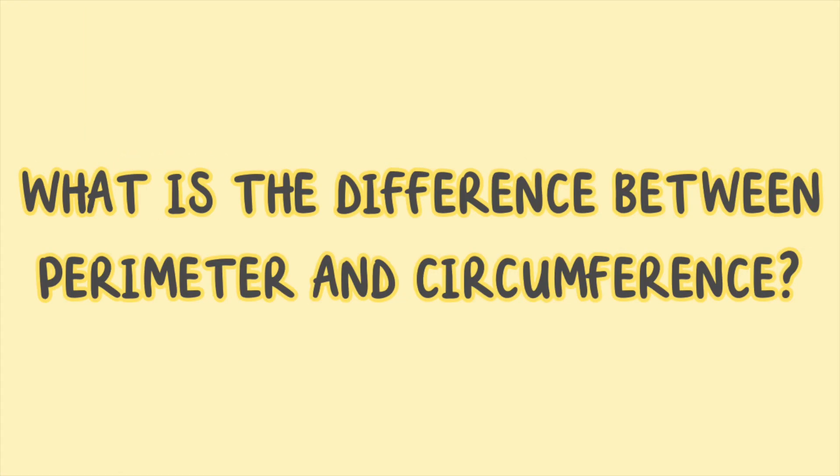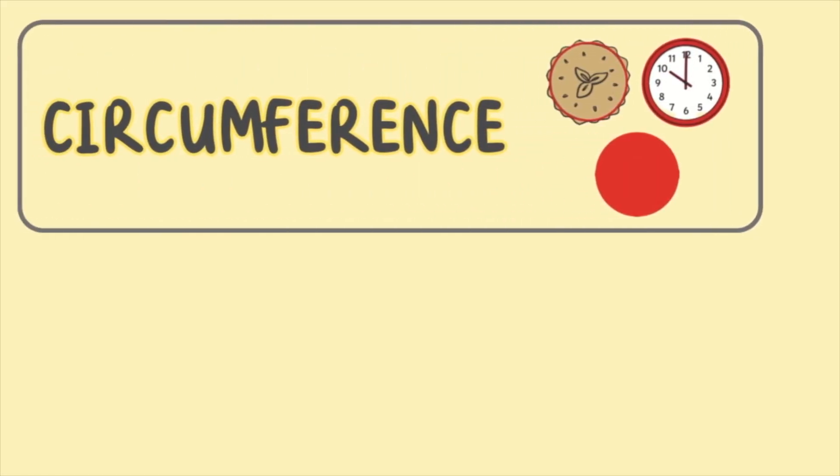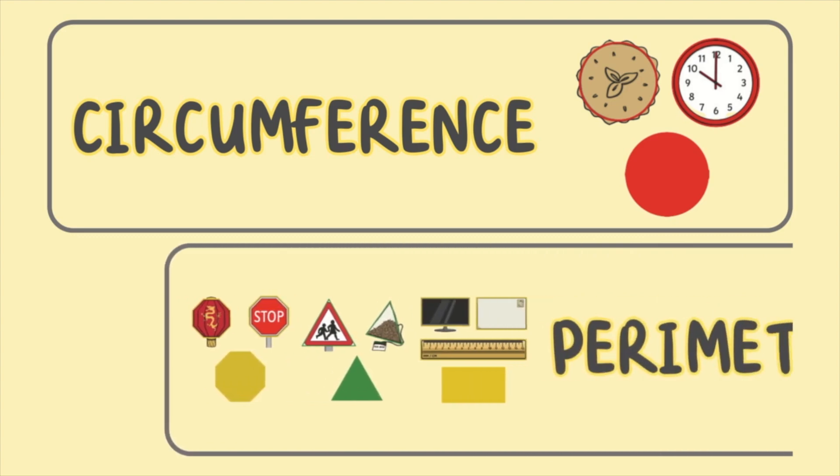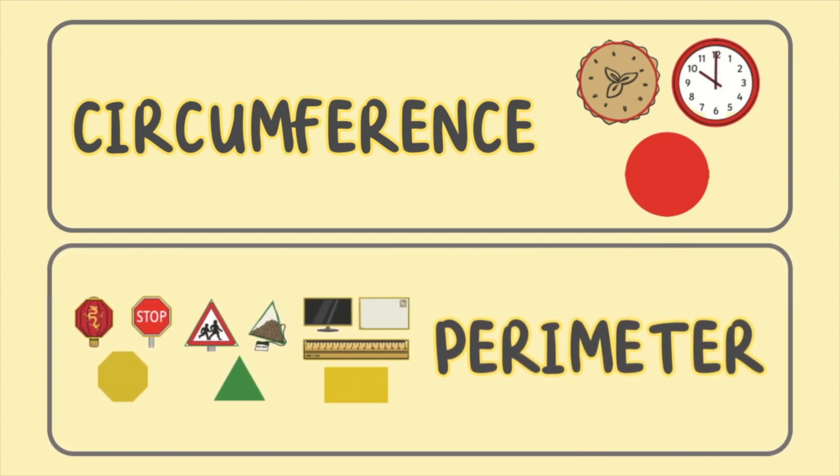What is the difference between perimeter and circumference? While both circumference and perimeter involve measuring the boundary of a shape, circumference is unique to circles. The perimeter applies to any polygon, such as rectangles, squares, triangles, and irregular shapes.